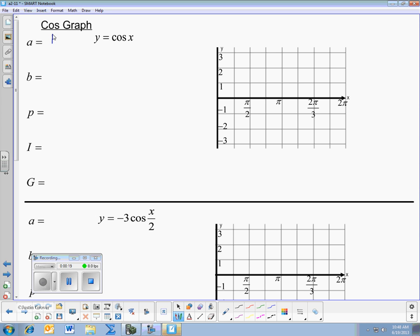We see the a is 1, the b is 1, the period is 2 pi over 1, which is 2 pi. Your interval is period divided by 4, so that's going to be 2 pi over 4, which is really pi over 2.